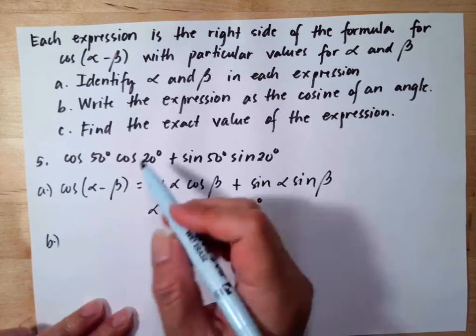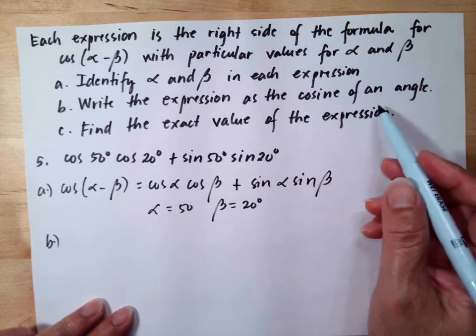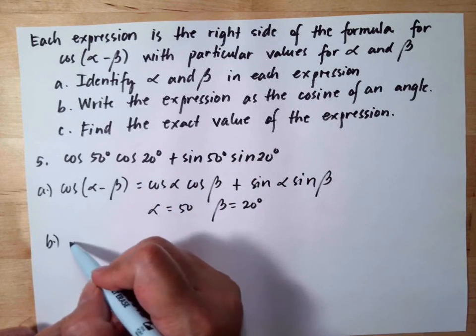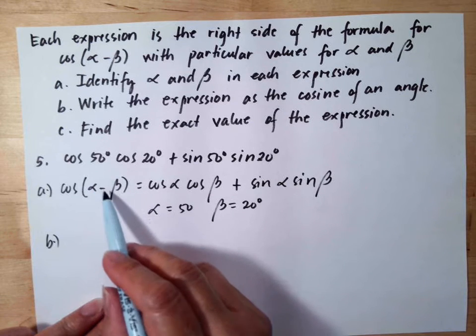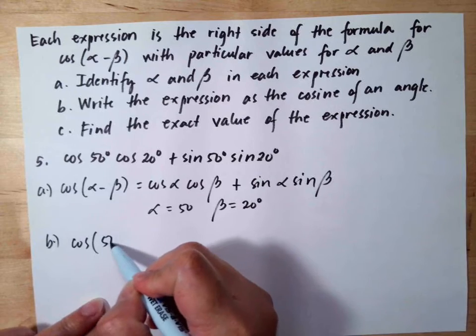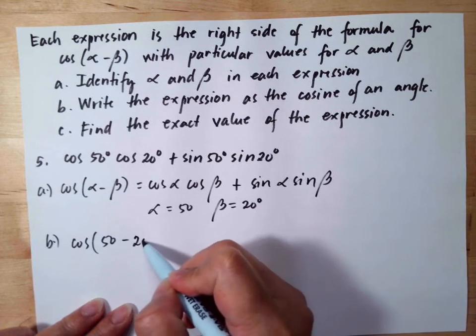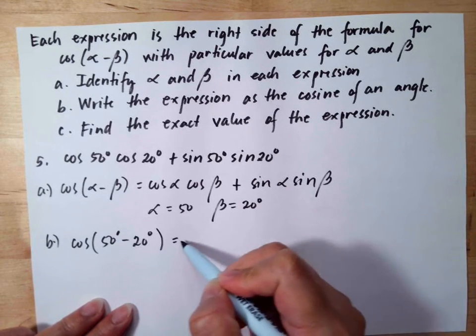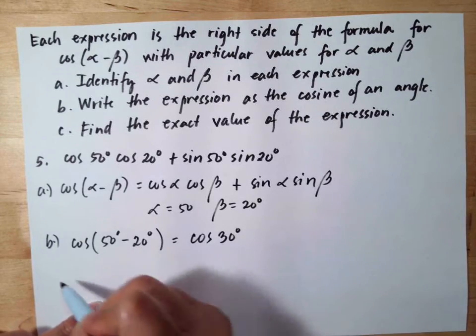For letter B, we need to write the expression as the cosine of an angle. So if we substitute alpha as 50 degrees and beta as 20 degrees, this will be equal to cosine 30 degrees.